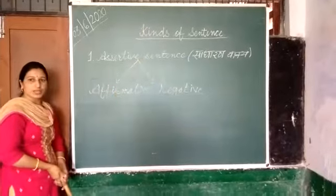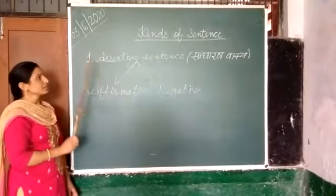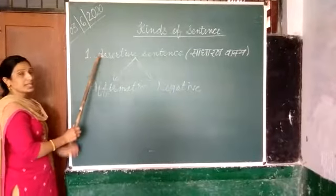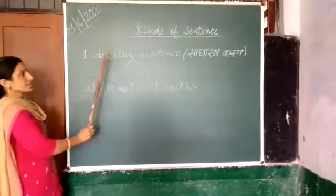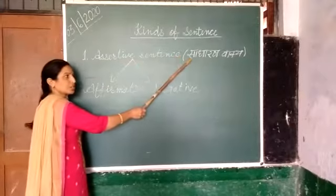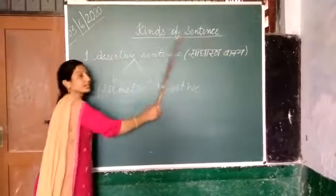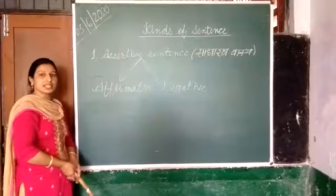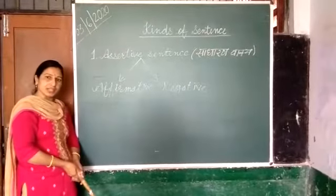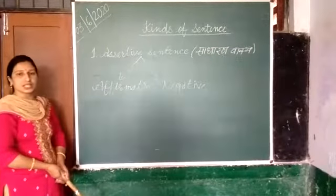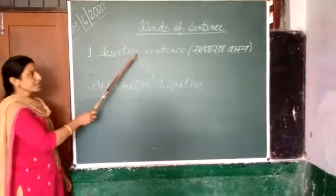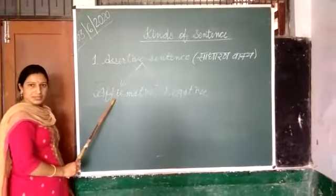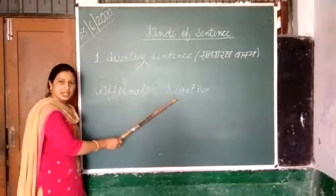There are five kinds of sentence but we will read two parts of sentence. First is Assertive Sentence. Assertive Sentence को Hindi में बोलेगे साधारण Vaakkyo. Assertive Sentence की Definition है: A sentence in which some statement or declaration is given is called Assertive Sentence. Assertive Sentence की two parts है — First है Affirmative Sentence और Second है Negative Sentence.